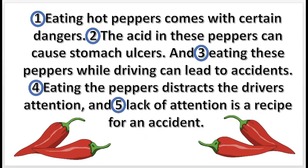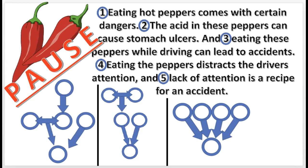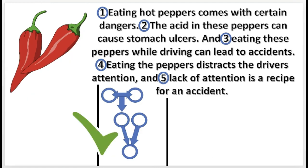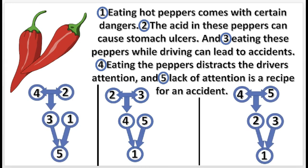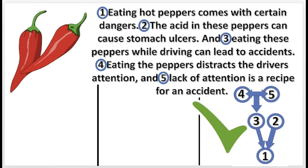Here's another practice problem. Begin by selecting the correct diagram for the argument, then choose the correct sequence of statements in the argument. 2 and 3 support 1 independently, and 4 and 5 support 3 conjointly.